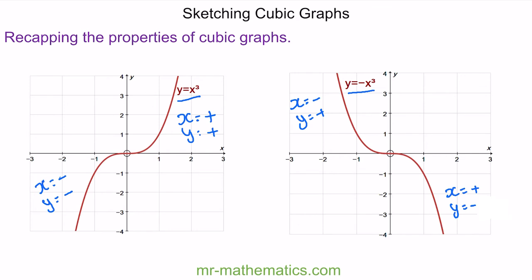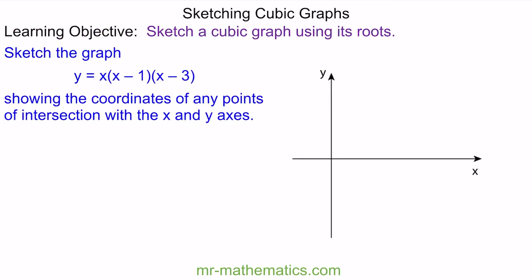Let's move on to sketching cubic graphs. To sketch a cubic graph we need to find the values of x when y is equal to zero — these give us coordinates along the x-axis and are called our roots. We also need to find the value of y when x is equal to zero, which gives us the coordinate along the y-axis, called our intercept.